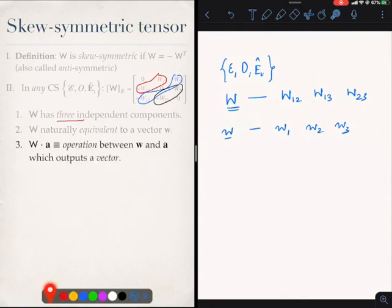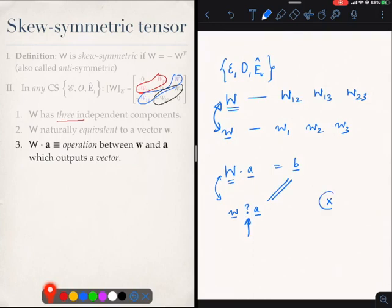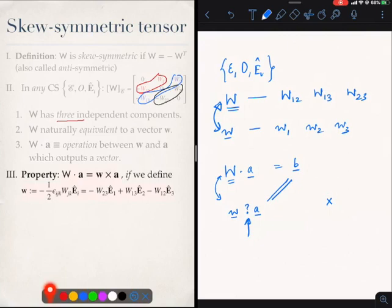The way we do it is that first we say that since these two are equivalent simply by counting, that means that any operation of capital W on any vector which gives me a vector b must be the same if I take the vector small w and operate it in some way on the vector a, it must also give me b. What is an operation between two vectors which gives me a vector? The most natural operation is the cross product.